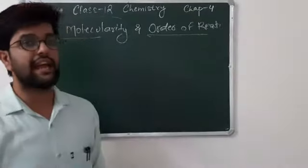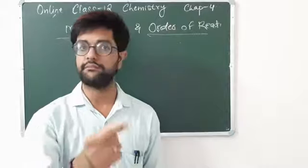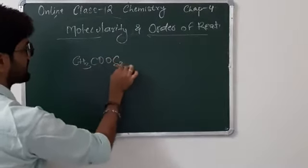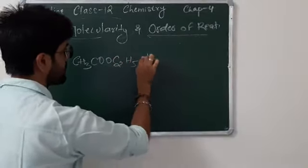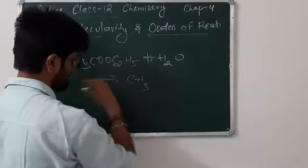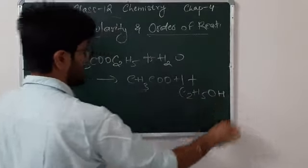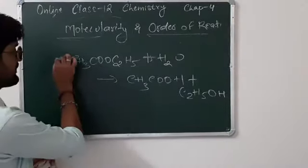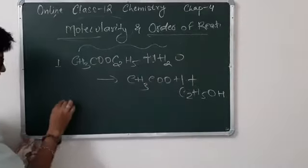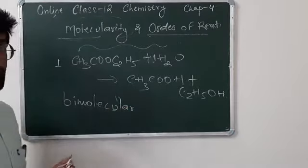Order of reaction is an experimental quantity in which you calculate the number of molecules participating in any chemical reaction. For example, the reaction of CH₃COOC₂H₅ with water molecules gives CH₃COOH plus C₂H₅OH. If we look at this reaction, one molecule of ester and one molecule of water participate - so it appears to be bimolecular. When a reaction's molecularity is 1, it is unimolecular; when 2, bimolecular; when 3, trimolecular.